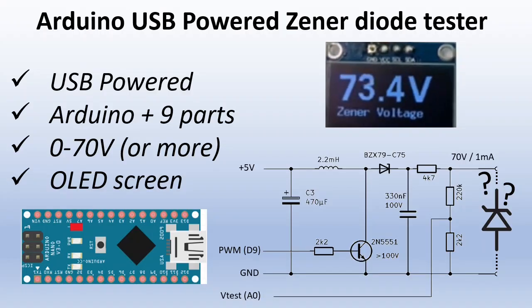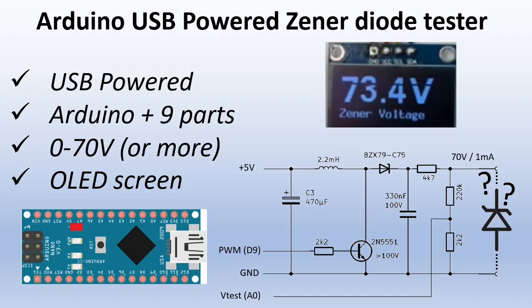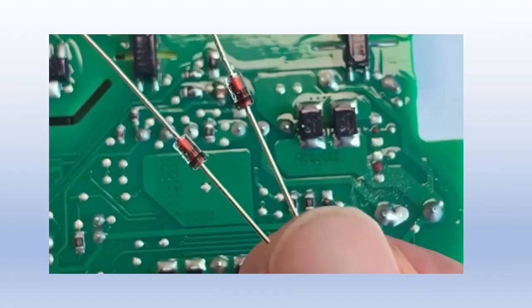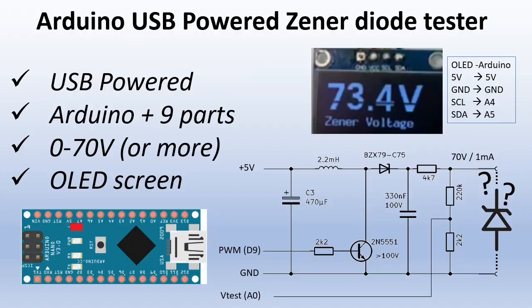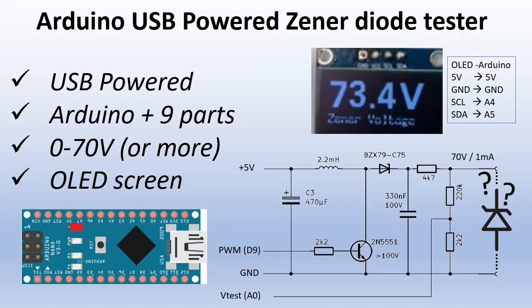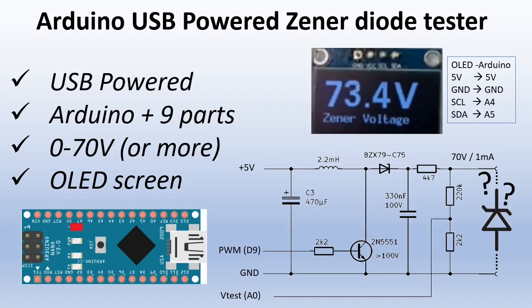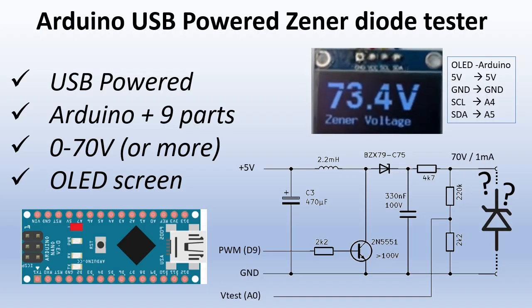Today we are cracking the code on Zener diodes. Without clear markings, they are masters in keeping their voltage values a secret. But not for long. Today we are building a USB powered tester to reveal their secrets.